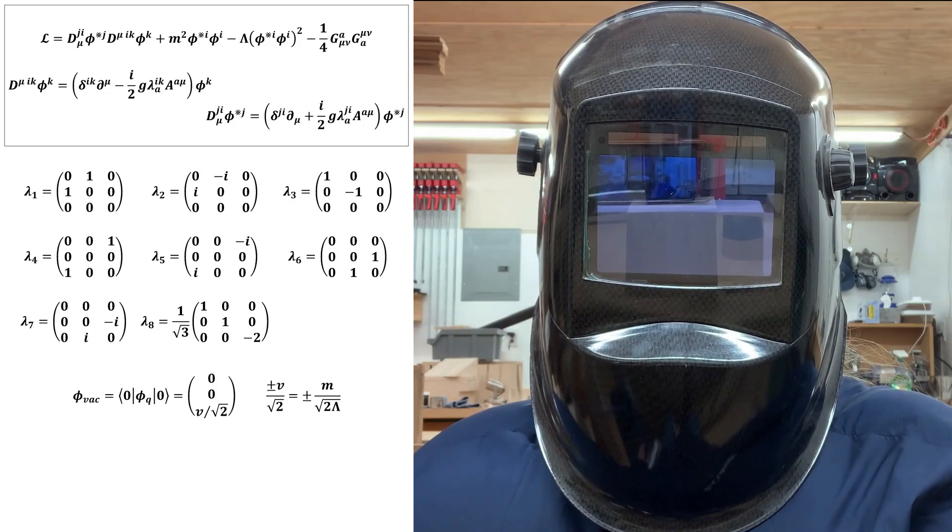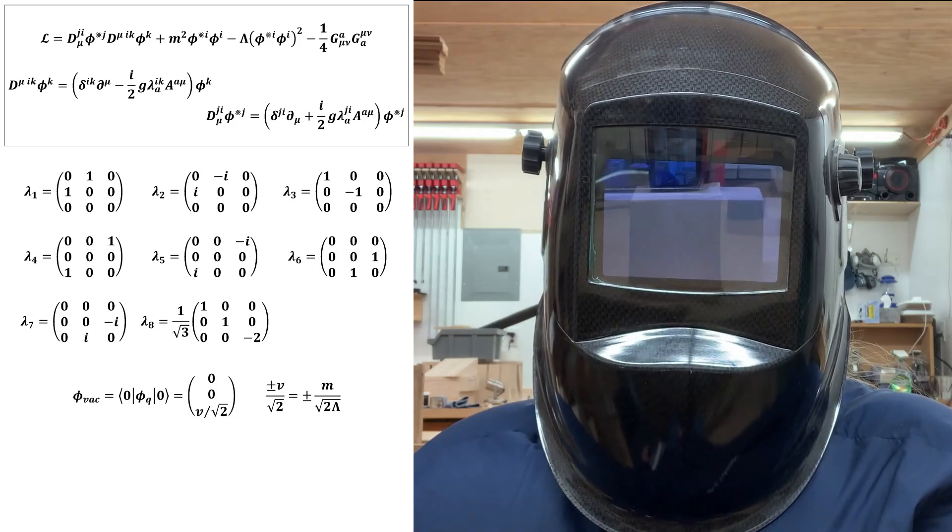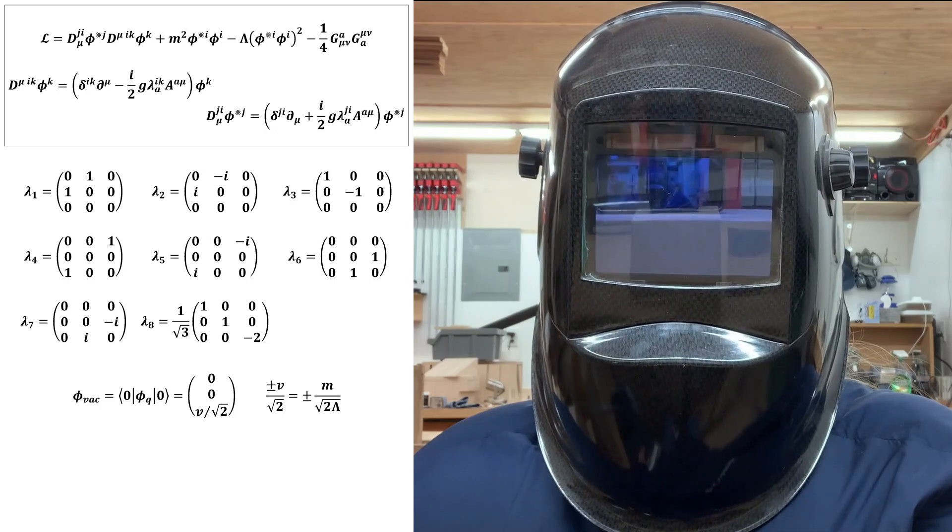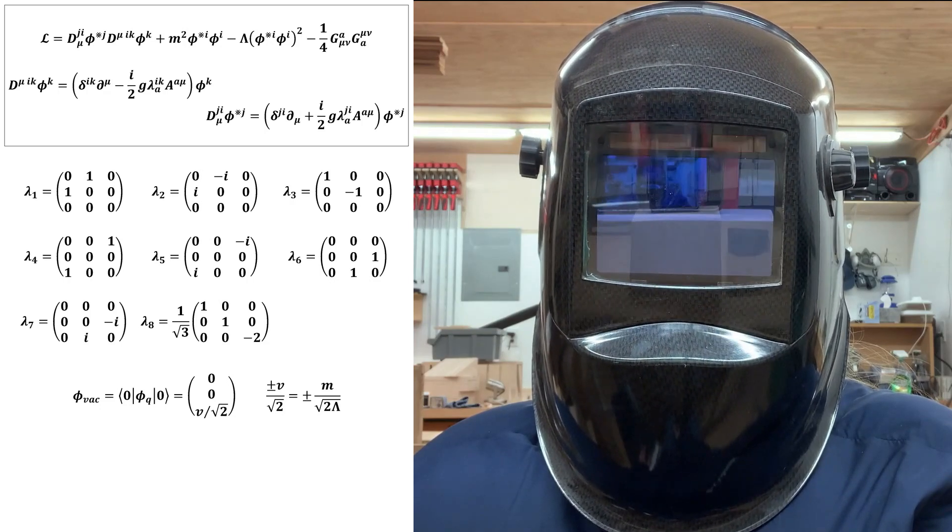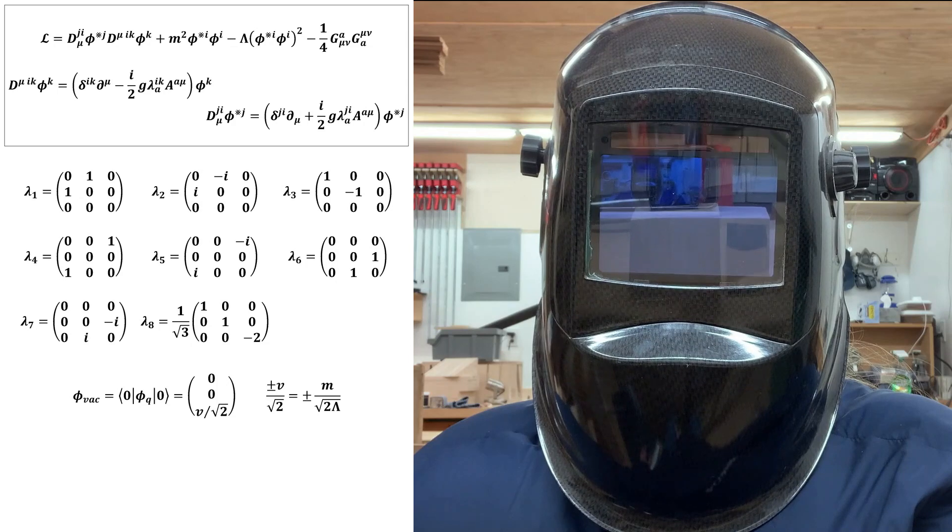Before we actually proceed with the calculation of the spontaneously broken Lagrangian density, it's interesting to predict what will happen using Goldstone's theorem. We see that there are five fields set equal to zero in the standard vacuum solution.